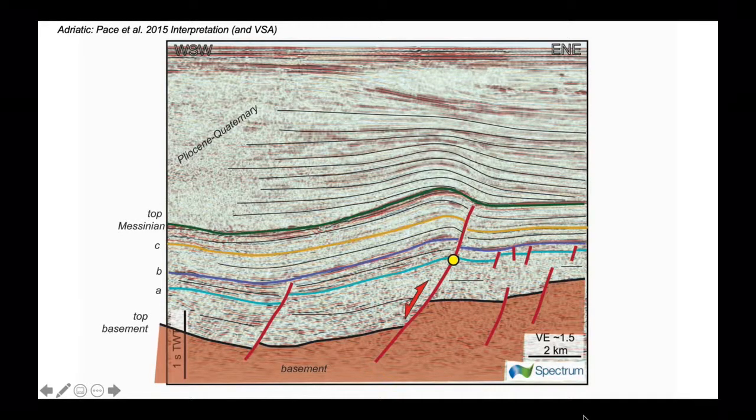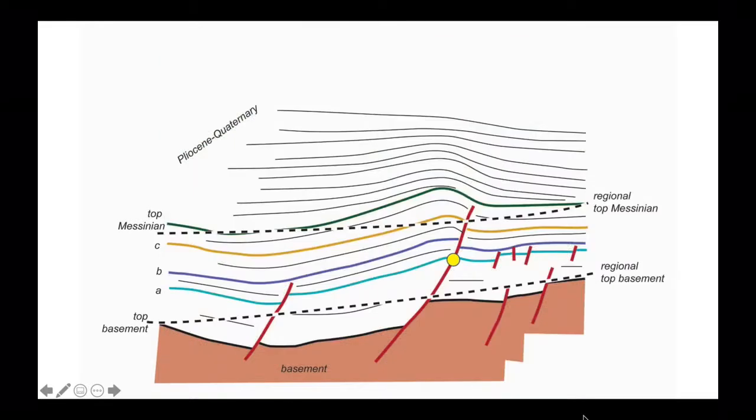Let's strip away the seismic and look at the regionals. The top regional is for the top Miocene marker, the green marker, and the lower one is for the top basement. We can see that the top basement horizon is below its own regional, so is in net extension, whereas the top Miocene marker is above its regional, so is in net contraction. We're dealing with a normal fault reactivated in contraction.